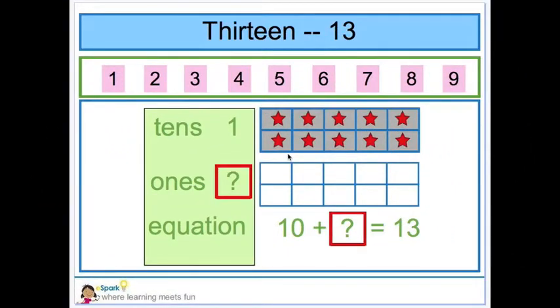This one is a little different. I know I want to get to 13. So let's count up from 10. 11, 12, 13. Now I have 13 stars. So I have 3 ones and 10 plus 3 equals 13.